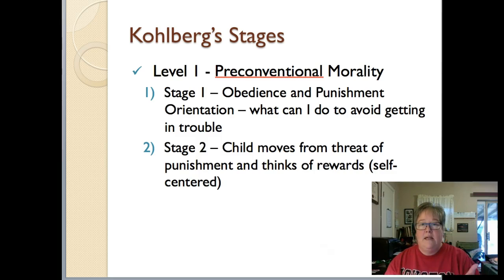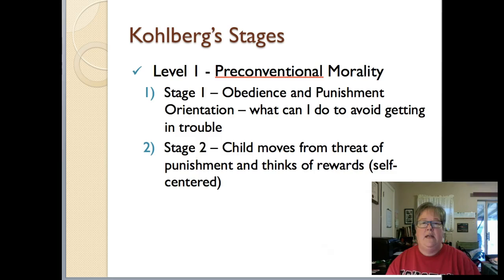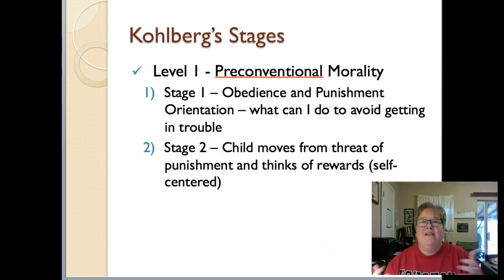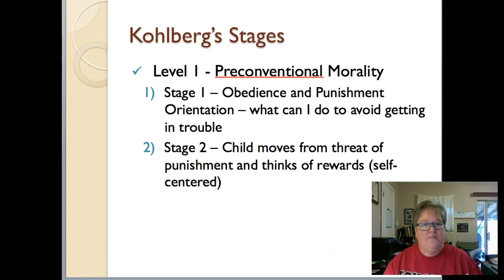Level one is pre-conventional morality. Stage one is obedience and punishment — the person's orientation is about what they can do to avoid getting in trouble. Stage two is where they move away from worrying about punishment and start thinking about rewards: what can I do so I get something out of this? They're becoming self-centered, thinking about how to solve the dilemma so that they get something positive.